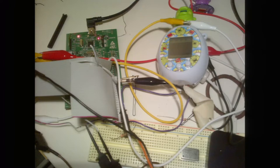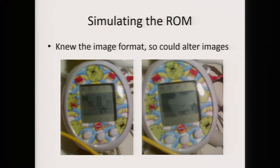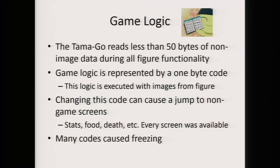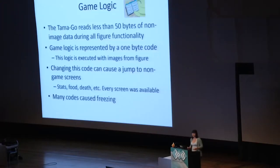Eventually I made a rig that basically simulated the ROM by bit-banging. From this I could do a few things. I could put different pictures on the front of the Tamagotchi. I was also able to play around with some of the logic. The game logic was expecting to take up a lot of memory, but it turned out to be quite small — less than 50 bytes of non-image data read at any point during the figure functionality. Even more interesting was that the game logic — what decided when you got points — was represented by a single byte code. Basically there are a few types of games: the one where you catch falling stuff and the one where you match stuff, and those are all in the internal ROM. The figure just says which bit of logic it is.